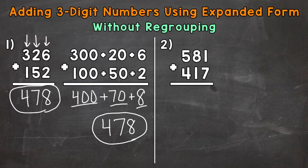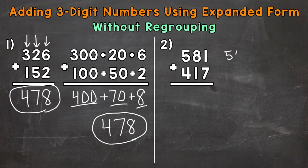Let's move on to number two, where we have 581 plus 417. For this one, we're going to need to put these numbers into Expanded Form. 581 first — we have a five in the hundreds place. That five represents five groups of 100 and has a value of 500. Plus an eight in the tens place; that eight represents eight groups of 10, so a value of 80. Plus a one in the ones place, representing one one, which has a value of one.